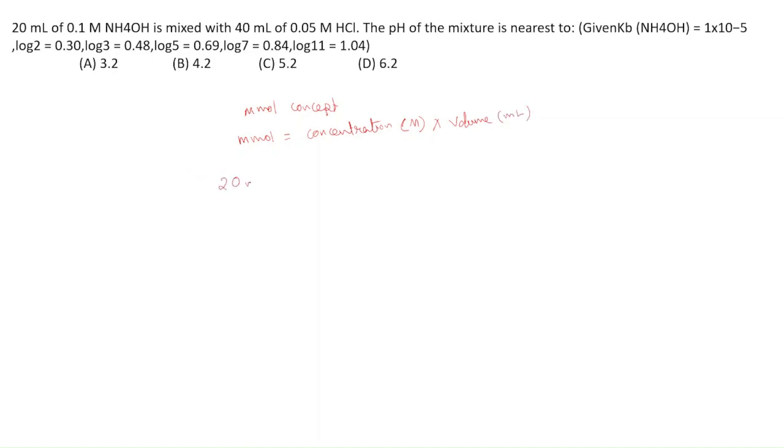We have 20 ml of 0.1 molar NH4OH, so millimoles of NH4OH equals 20 times 0.1, which is 2 millimoles. We have 40 ml of 0.05 molar HCl, so millimoles of HCl equals 40 times 0.05, which is also 2 millimoles. NH4OH reacts with HCl to form NH4Cl plus H2O.